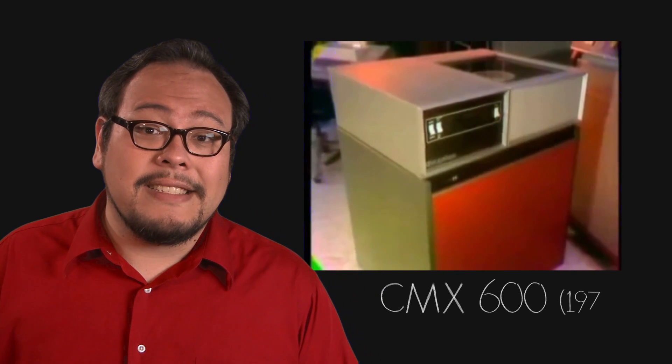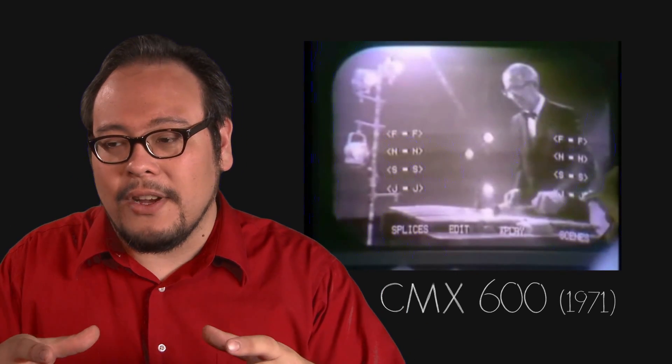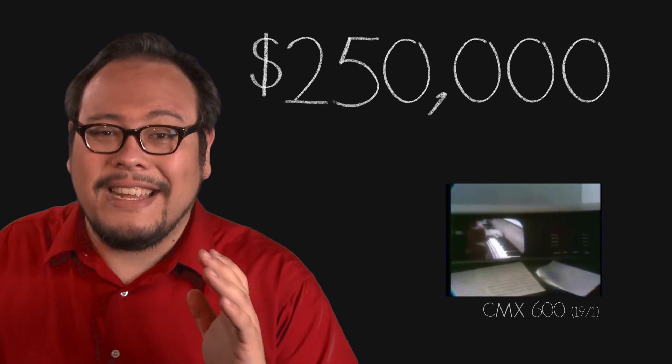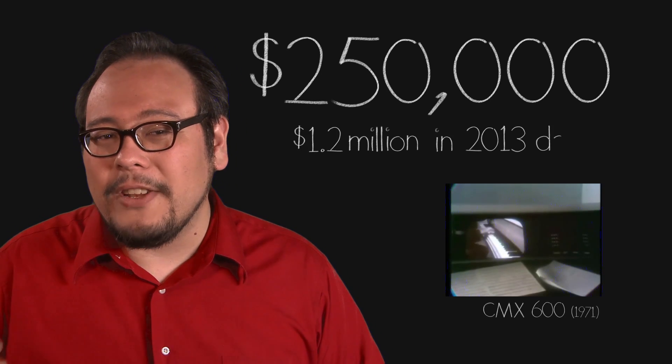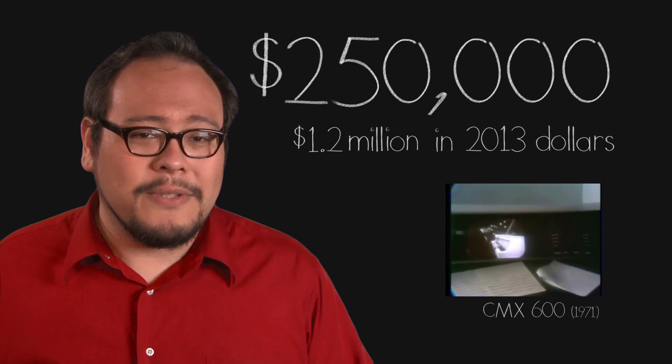The first NLE was the CMX600 in 1971, and this was a beast of a machine. It recorded half-resolution black-and-white video files onto washing machine-sized disk packs. The whole thing cost a little over $250,000 in 1971 — that's about $1.2 million in 2013 money. Only 6 were ever produced. But the idea of editing non-linearly was just too good to let go to waste.